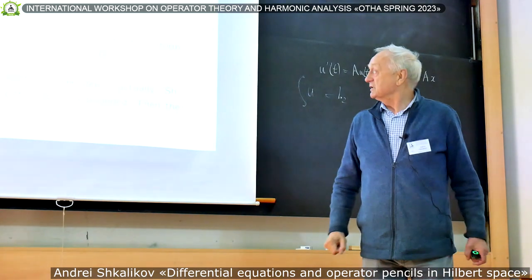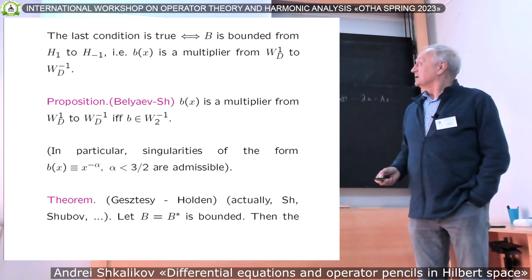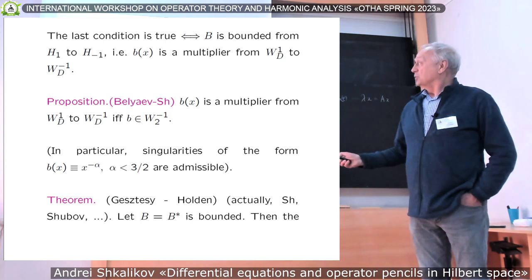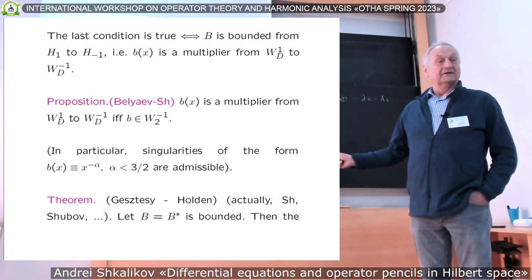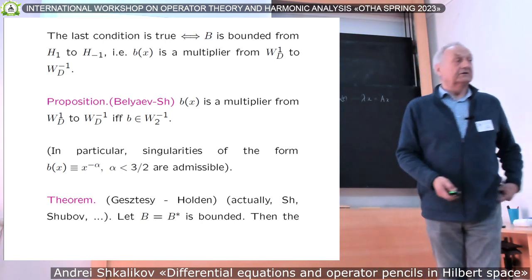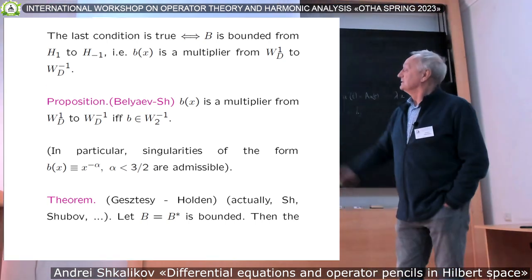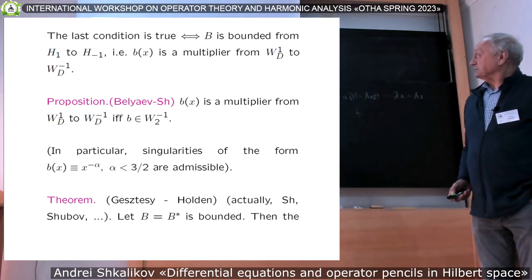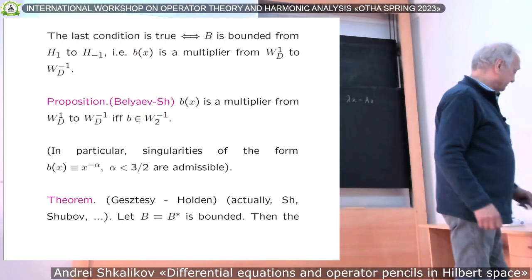What does it mean? It means that in all previous papers, B was just bounded, it belongs to L infinity. We can admit that B has singularity of order less than 3/2. B can be delta function and so on. It can be just any function from this space such that its primitive belongs to L2.